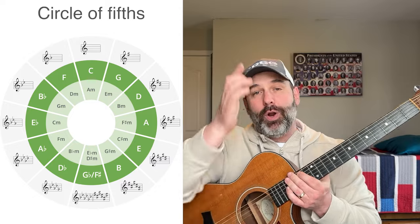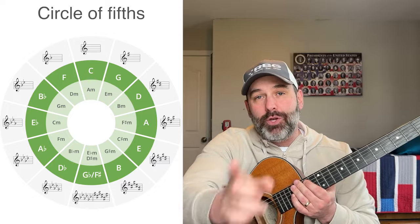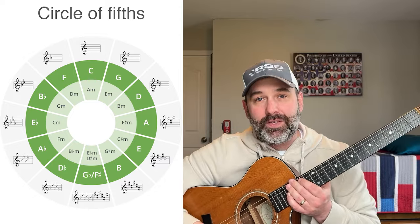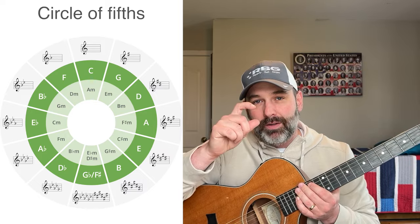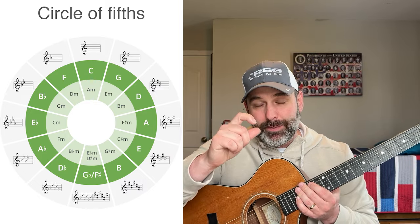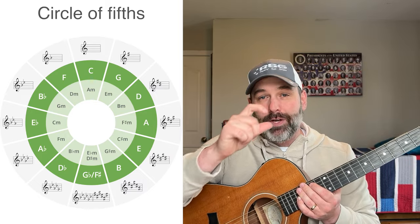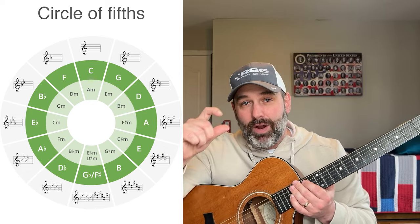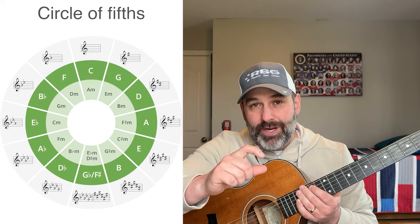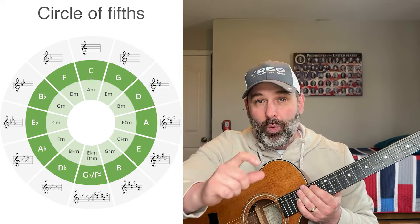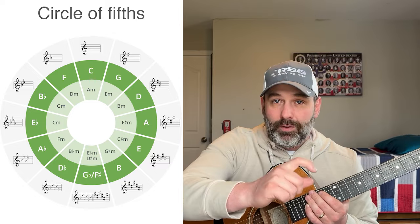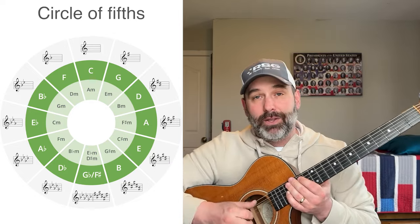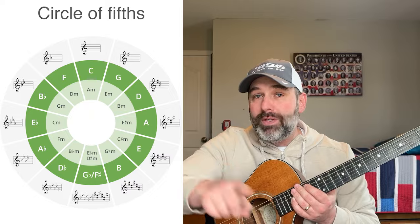Every time you take a slot on this circle of fifths: the middle slot is the one, the one directly to the left is the four, the one directly to the right is the five, the one directly under is the six, the one to the left of that minor is the two, and the one on the other side is the three. That's always how it works.